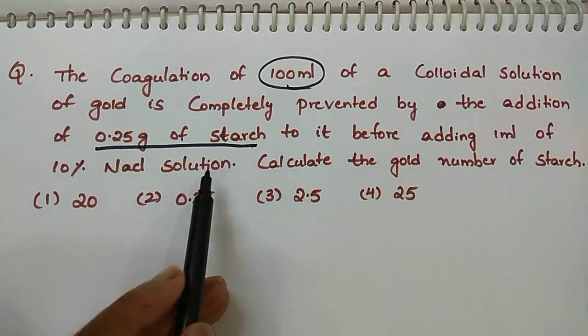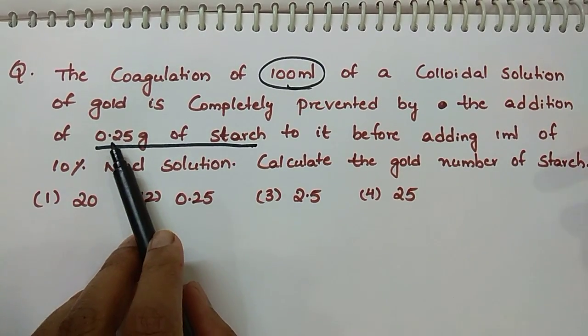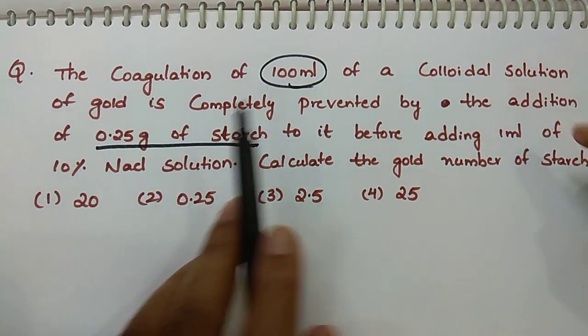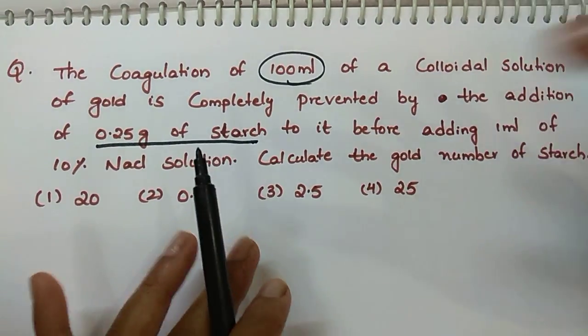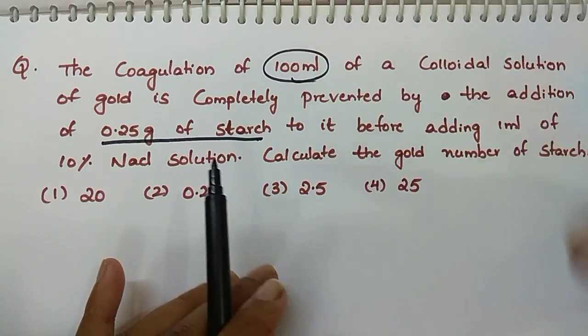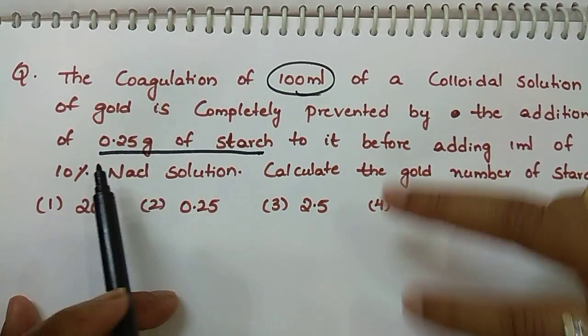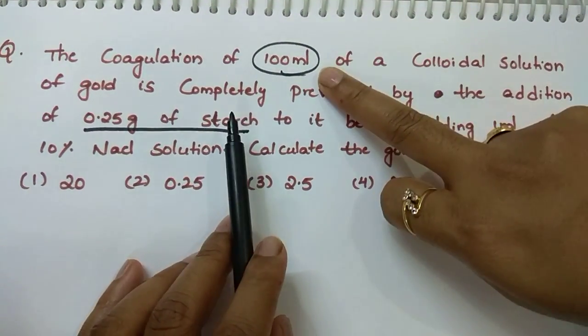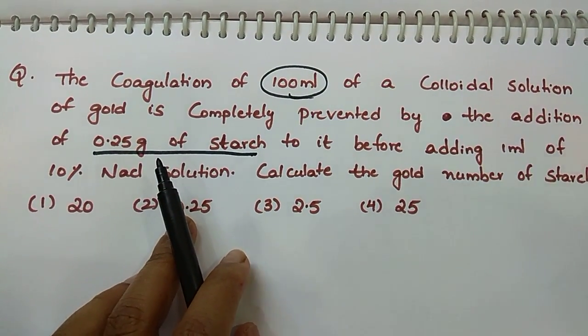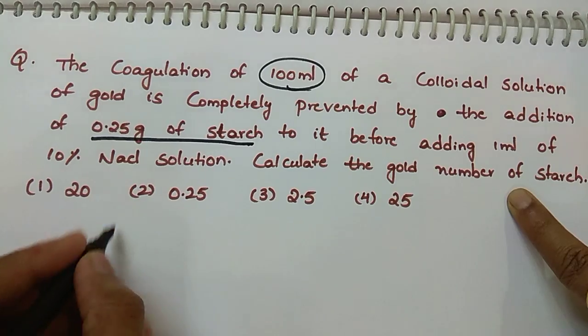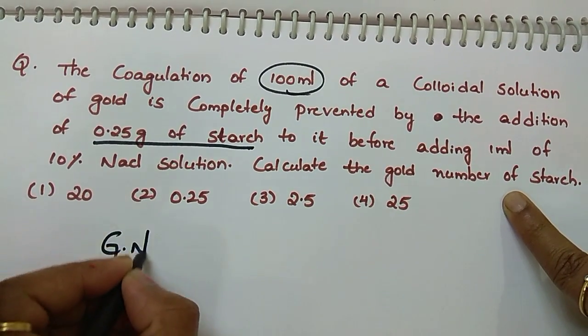Means when you are adding 0.25 gram of starch to 100 ml colloidal solution, it won't undergo any coagulation. You are protecting this 100 ml of gold solution by adding 0.25 gram of starch. You have to calculate gold number. What is the formula? Number of milligrams of substance, the lyophilic colloidal solution added, divided by volume into 10.